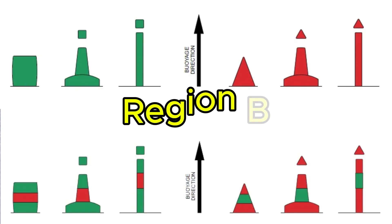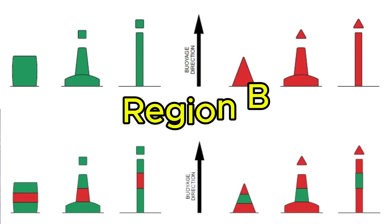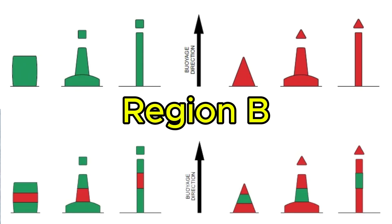Please note that in Region B, the only differences apply to lateral and preferred channel marking buoys, which are just opposite to Region A — that's it.